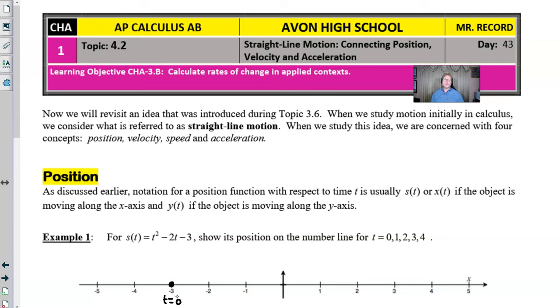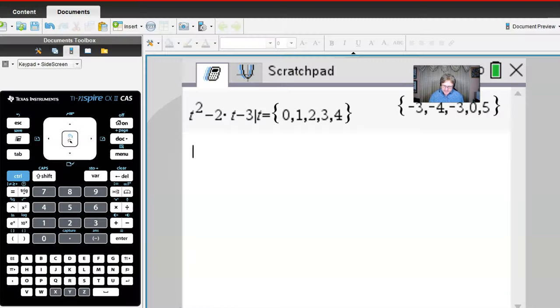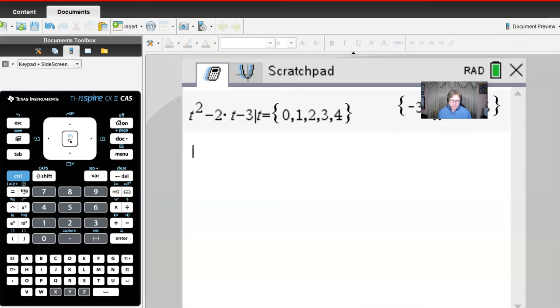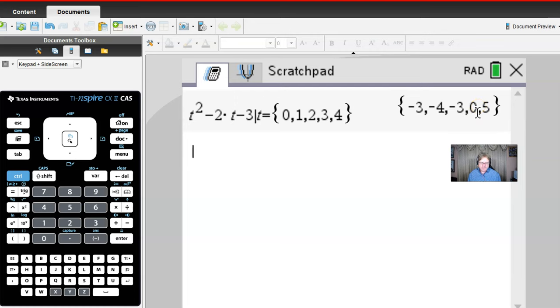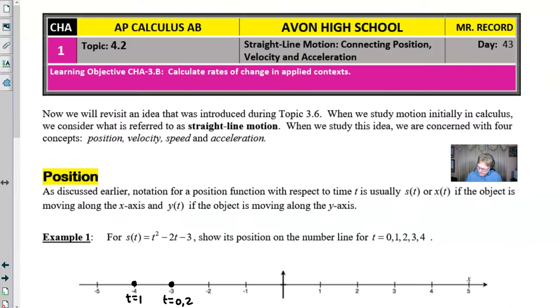I went ahead and recorded the values negative three, negative four, negative three, zero, and five that we had on our calculator. As I enter these onto my screen, I can just also state the time at which we were able to arrive at that point. Notice negative three occurs twice. I can show you from the TI-Nspire, negative three occurred twice right there, and then I have a zero and five at times three and four.